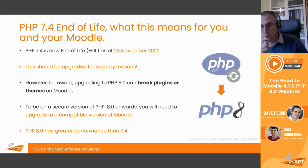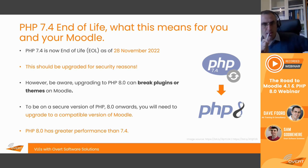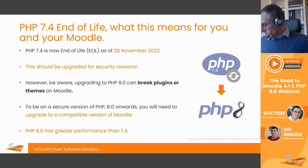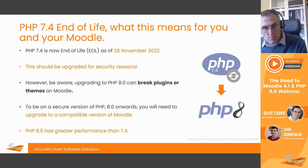To update to PHP 8, you need to be on Moodle 3.11.8 or at least 4.0.2. Upgrading to PHP 8.0 can break plugins or themes on Moodle, so to be on a secure version of PHP 8.0 you'll need to be on a compatible version of Moodle. It's also important to keep in mind that PHP 8.0 will have greater performance than 7.4.